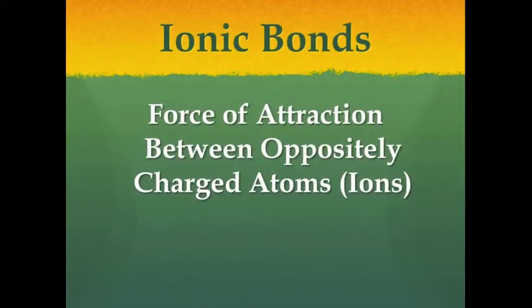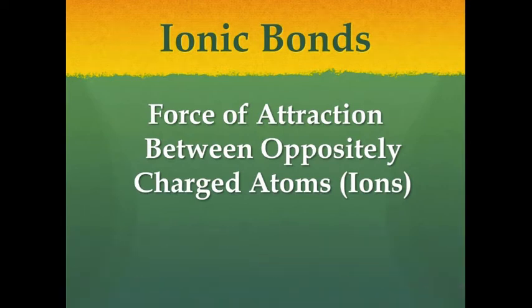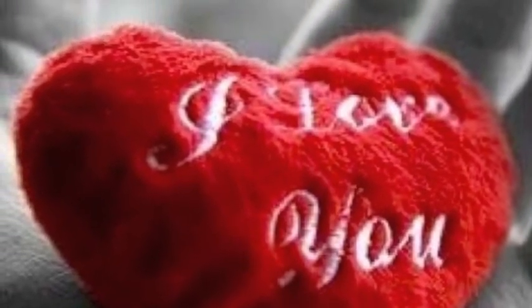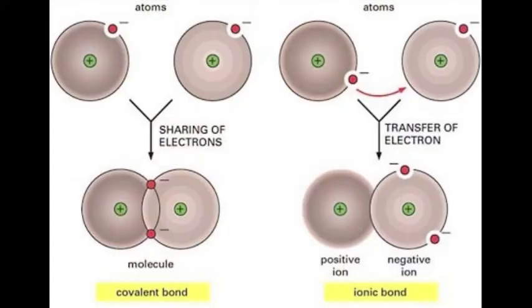If covalent bonds are all about sharing, ionic bonds — the second type of bond that you're responsible for knowing — are all about bringing oppositely charged atoms together. Oppositely charged atoms are called ions. That means that ionic bonding works just like true love: opposites attract. Here is a visual recap: ionic bonding — opposites attract; covalent bonding — you're sharing electrons.